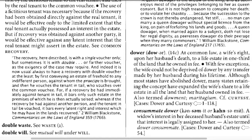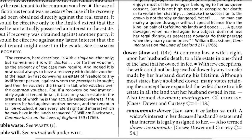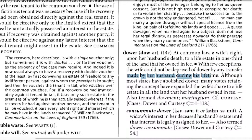Dower — 14th century. At common law, a wife's right upon her husband's death to a life estate in one third of the land that he owned in fee. With few exceptions, the wife could not be deprived of dower by any transfer made by her husband during his lifetime. Although most states have abolished dower, many states retaining the concept have expanded the wife's share to a life estate in all the land her husband owned in fee. Also termed dowement.